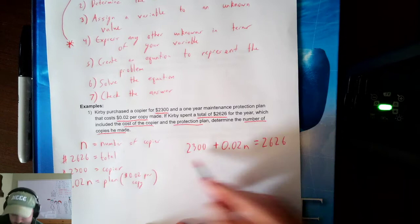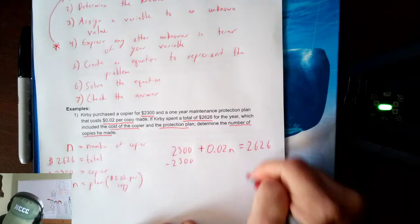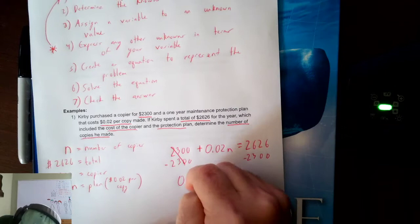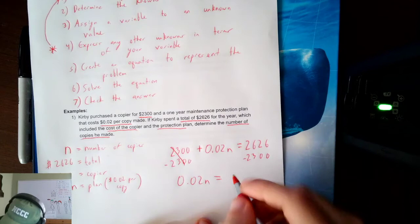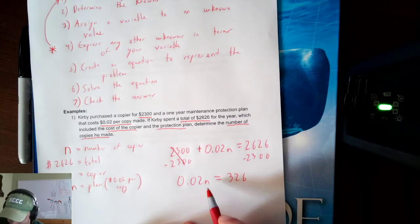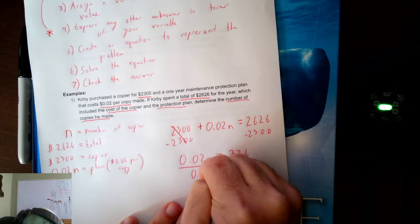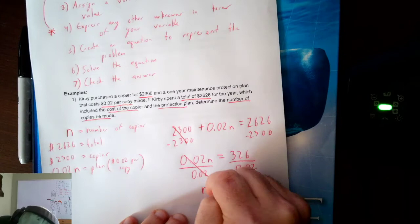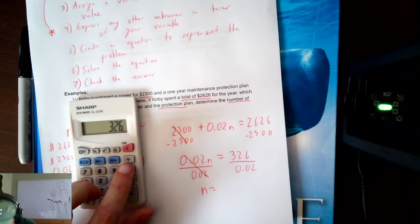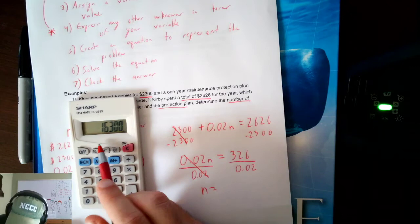We've seen equations like this. To get rid of 2,300, I subtract it from both sides — it cancels, leaving 0.02N equal to 326. To get N alone, I divide both sides by 0.02. The opposite of multiplication is division, so dividing by 0.02 gives me N equals 326 divided by 0.02, which gives me 16,300 copies.